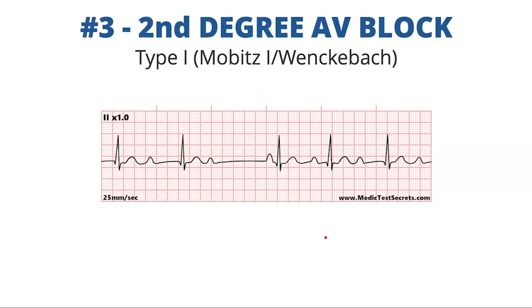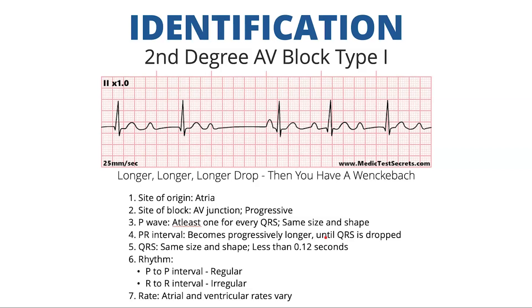Next we have second degree AV block type one. This can be called either a Mobitz one or a Wenckebach. To identify second degree type one, the heart block poem is: longer, longer, longer, drop — then you have a Wenckebach. One of the big things with this rhythm is the R to R interval is irregular. What I like to do is look for that dropped beat. You see the complexes marching along, and it looks like the next one should be right here, but it's not — that's our dropped beat.